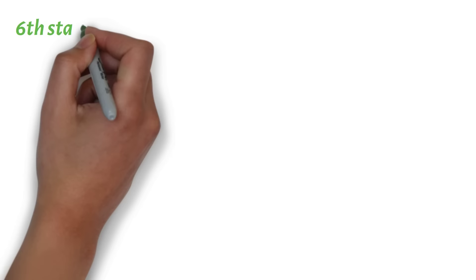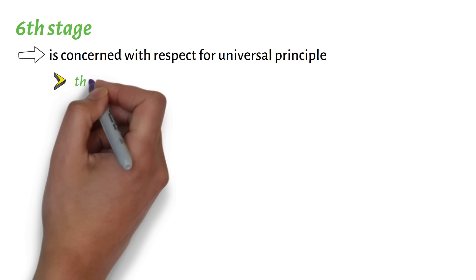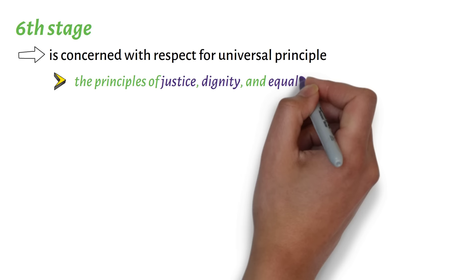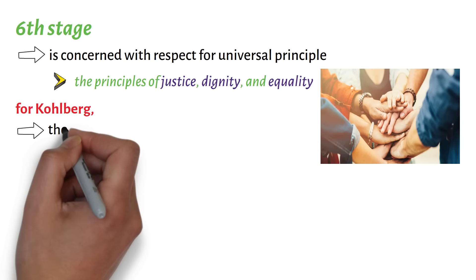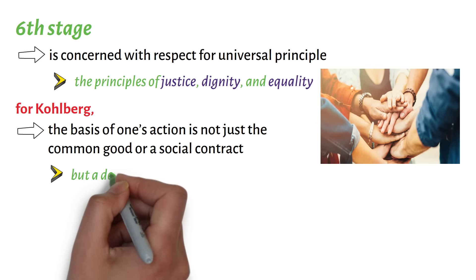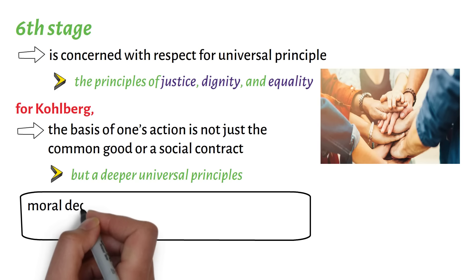The sixth and last stage is concerned with respect for universal principles such as the principles of justice, dignity, and equality. For Kohlberg, the basis of one's action is not just the common good or a social contract, but deeper universal principles. Hence, according to Kohlberg, moral decision is not just based on the laws and rules of society, but on one's conscience.